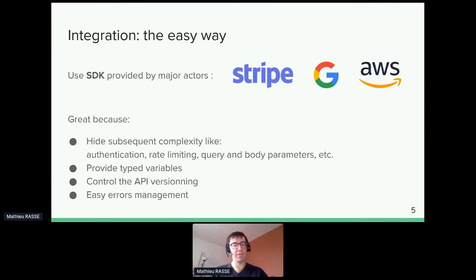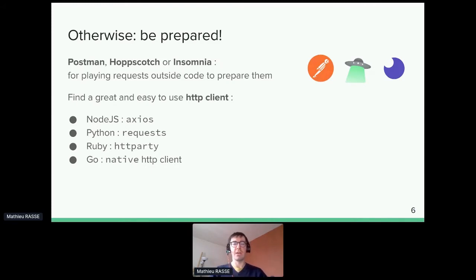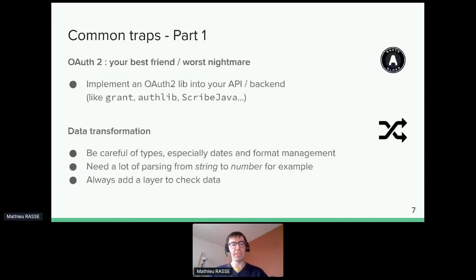If you don't have an SDK, here's how to do it manually. First, use a nice tool to play with the API before starting integration inside your code — this lets you figure out what parameters you'll use and share test requests with other developers. Tools like Postman, Hoppscotch, or Insomnia work well. Then find a great HTTP client for your language. At Meta API we love Axios, which works both on the browser and on Node, so we can use the same library across our entire stack — and it has a great interceptor system.